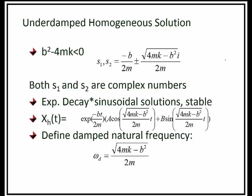In the third case — the underdamped homogeneous solution — where b squared minus 4mk is less than zero, the roots of the characteristic equation are complex. The homogeneous solution includes an exponential decaying portion and sinusoidal sine and cosine terms. The sine and cosine functions have frequency omega d, which we define as the damped natural frequency.